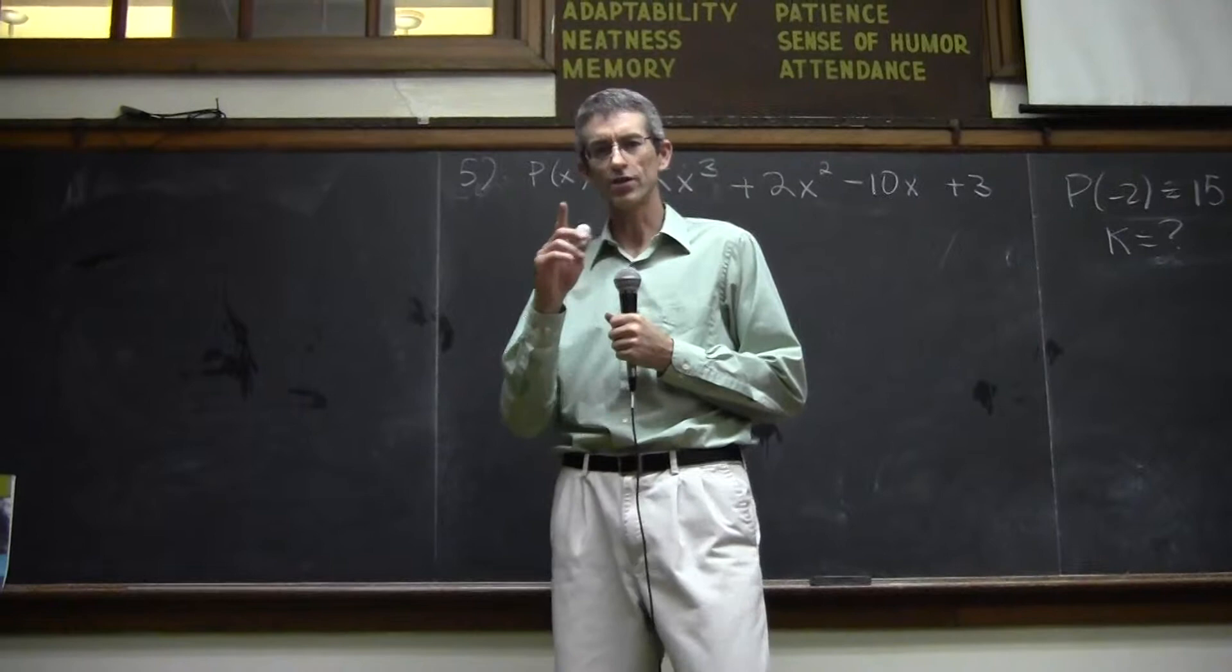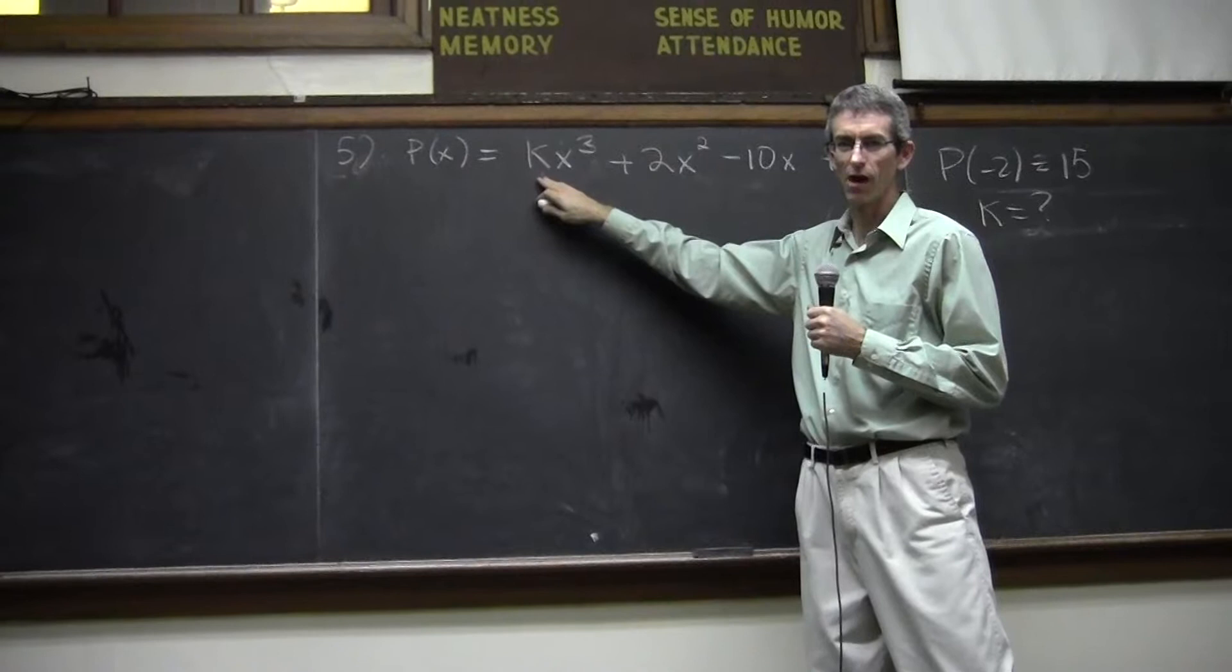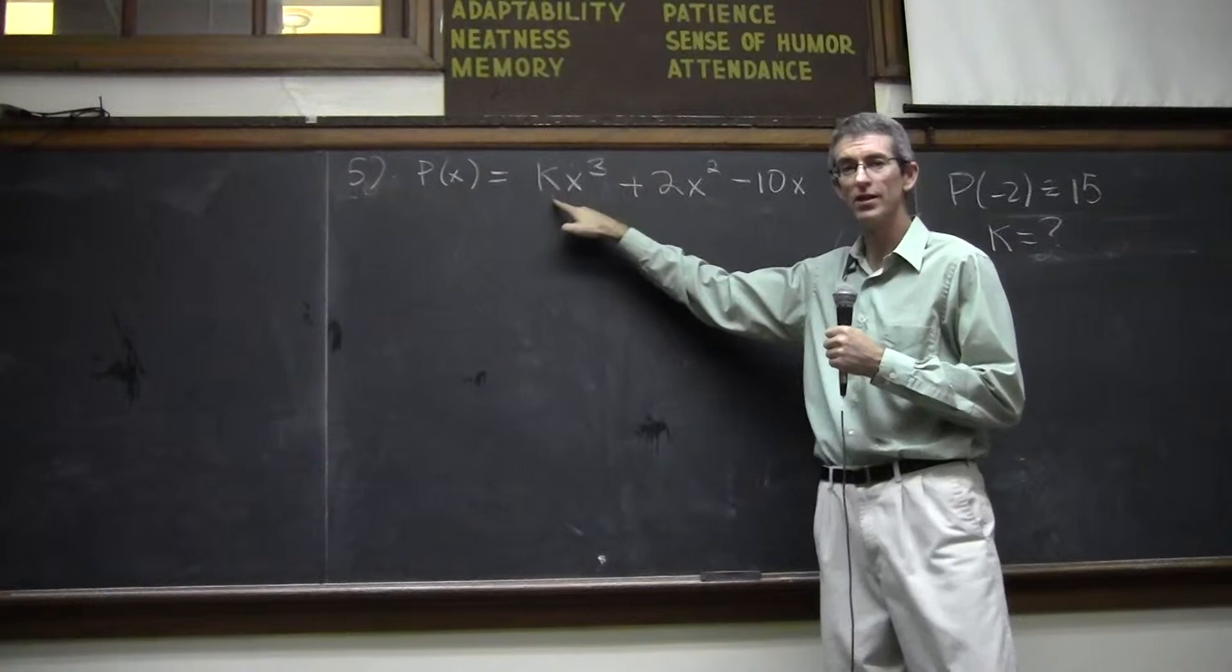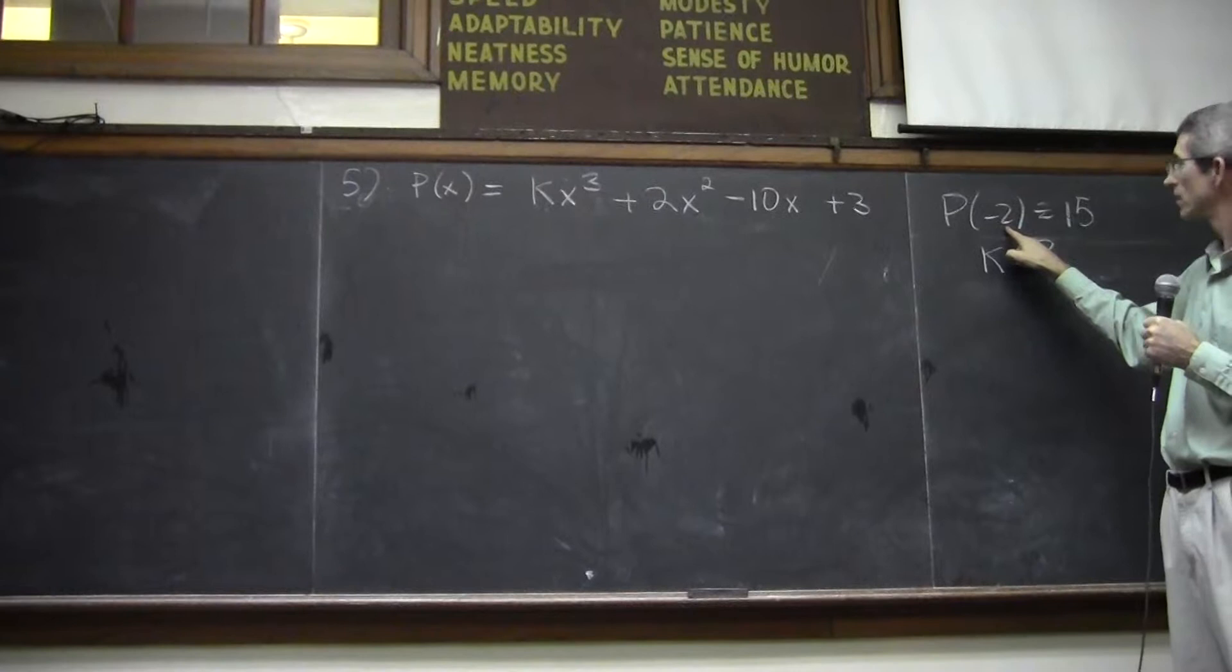You've got this polynomial with a K, all right? That's what's throwing people off. Instead of normally you see a number there, it's a variable. And they want you to figure out what that value is if, and they're telling you that if you took negative 2 and stuck it in for x, you should get 15 as your final answer. So what would K have to be?